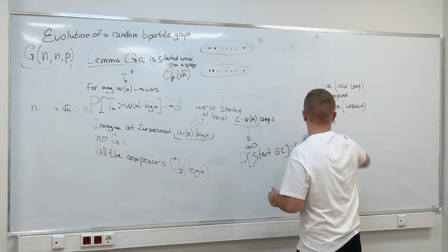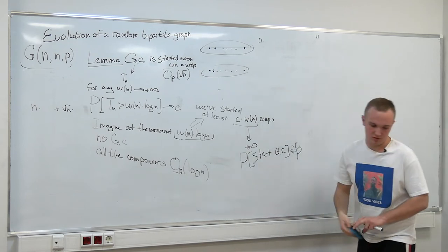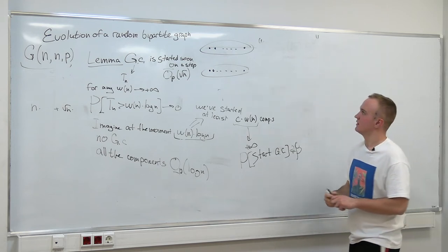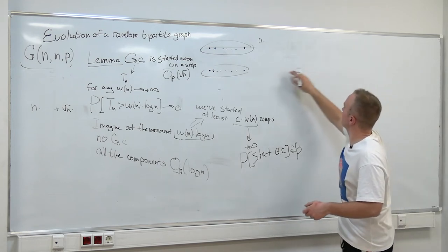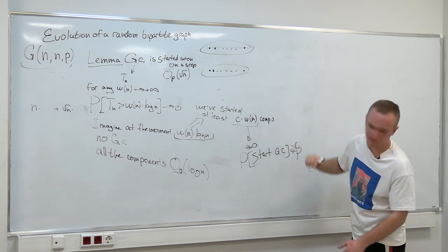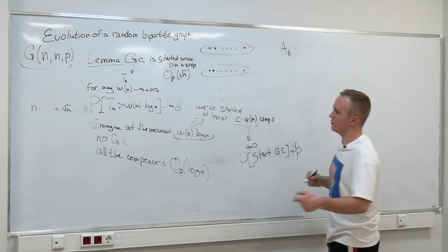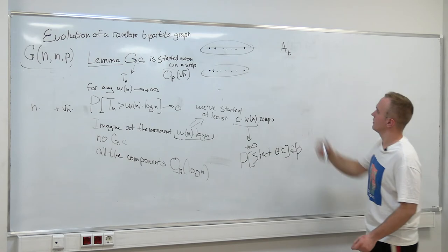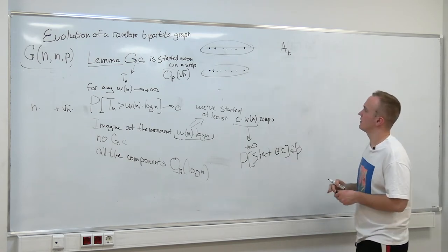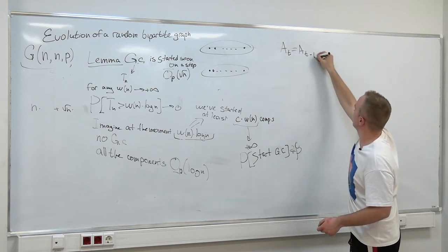Now some machinery. Our goal is: when we start the giant component, what will be the equation for the active vertices?